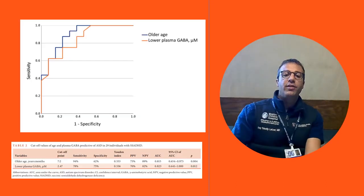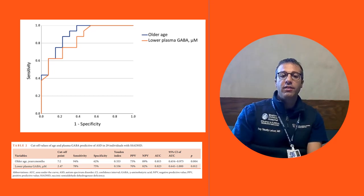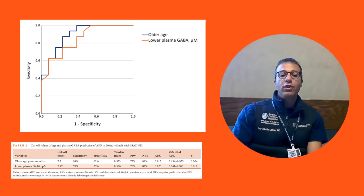With this figure and table, you can see the discriminative threshold values for age and plasma GABA, after which the likelihood of autism occurring in SSADH deficiency patients increases.